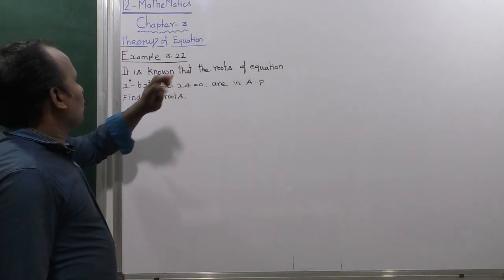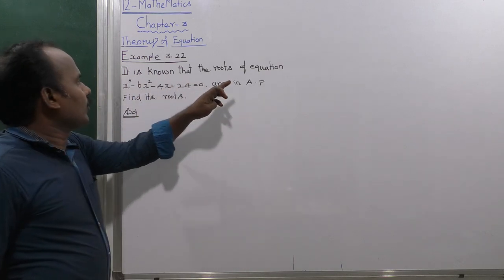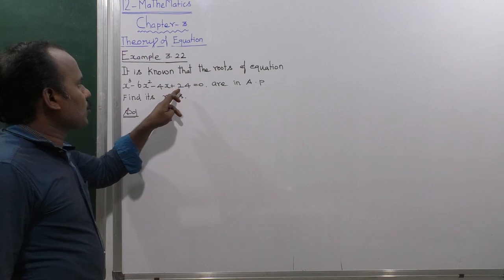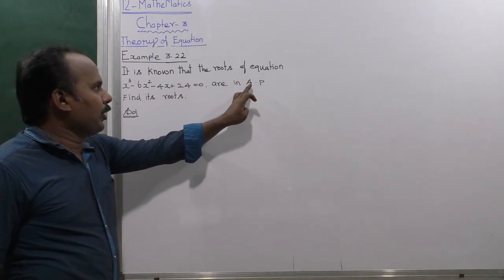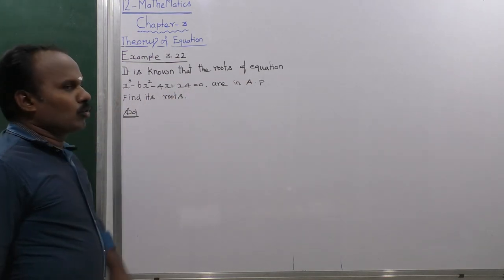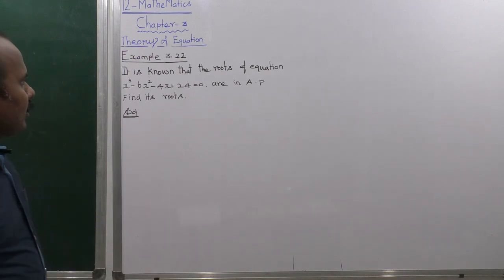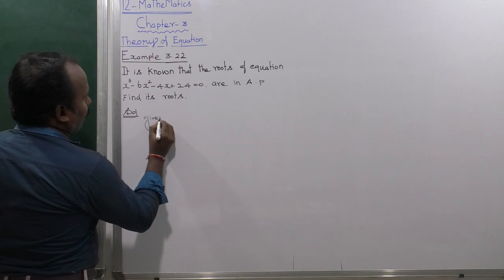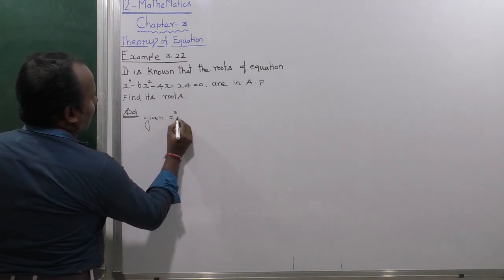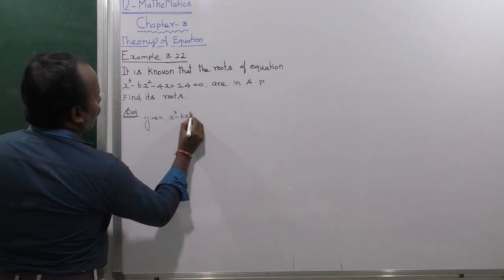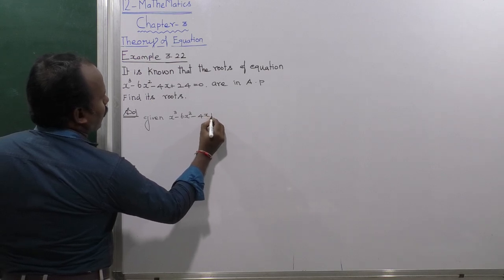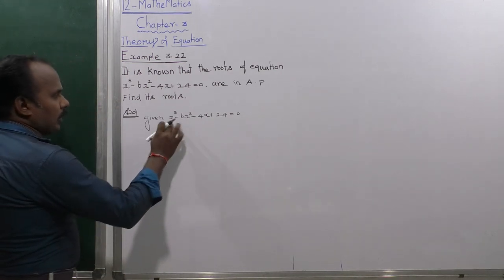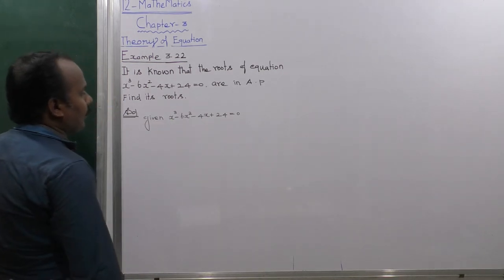Example 3.22: It is known that the roots of the equation x³ - 6x² - 4x + 24 = 0 are in AP. Find its roots. Given: x³ - 6x² - 4x + 24 = 0. This is a cubic equation.